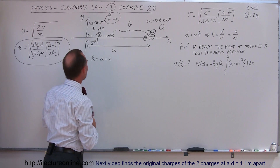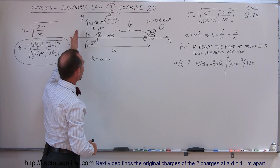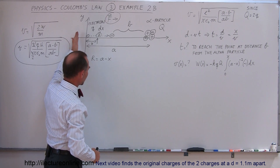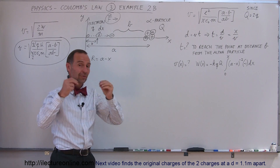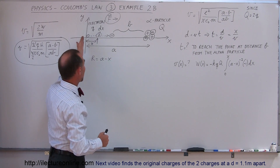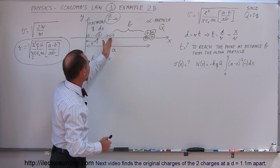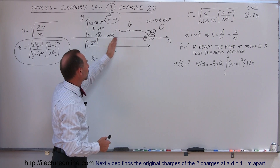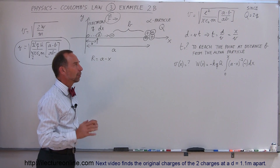The electron starts at the origin, it's let go, and the electron will fly towards the alpha particle because the force of attraction is very strong. We want to know how long it will take to go from this location to this location, a distance b away from the alpha particle.